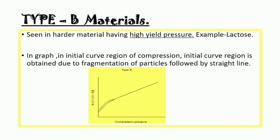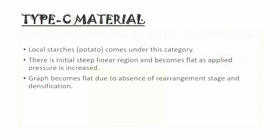In case of type C material, corn starch comes under this category. It means this is the only graph which is insignificant in our pharmacy. Graph becomes flat due to absence of rearrangement state and densification.